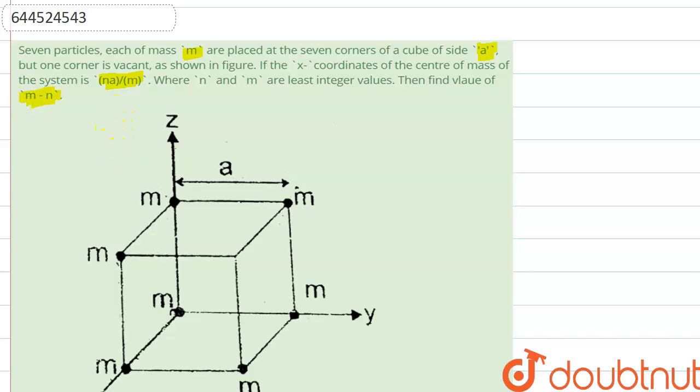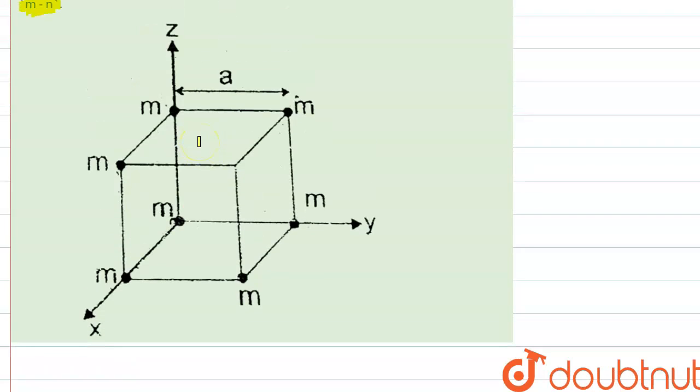From here we can see that there are eight corners of the cube and this corner is empty. So for calculating center of mass, we place a positive m mass and negative m mass at this point of the cube.